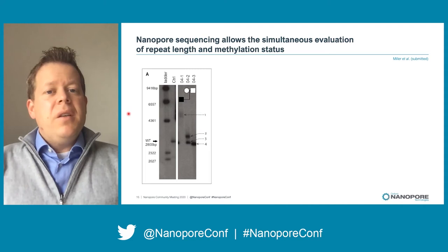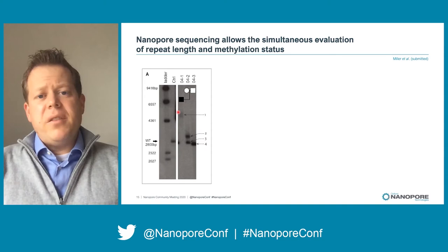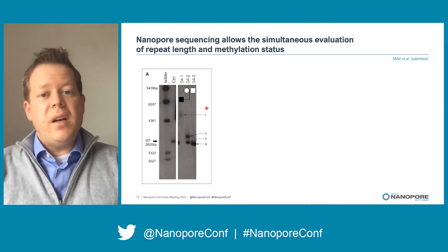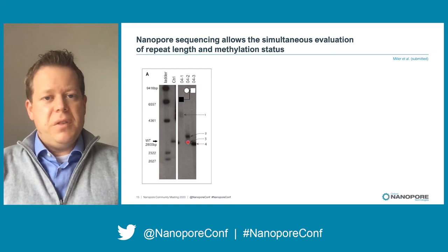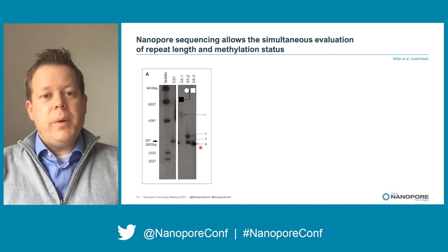Here I'm showing you a Southern blot from a family in which the proband is known to carry an expansion of a triplet repeat within the 5' UTR of XYLT1. This results in methylation and silencing of the gene and leads to a disease called Baratela-Scott syndrome — a recessive condition where individuals have skeletal dysplasia, short stature, and developmental delay. This individual inherited the expansion from his mom, who carried a wild-type allele and a pre-mutation allele. Dad is wild-type, but the proband inherited a de novo deletion from dad, so the proband has only one copy of the gene, inherited from his mom.